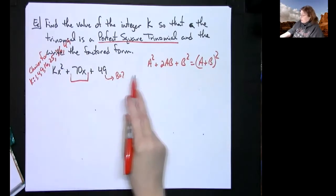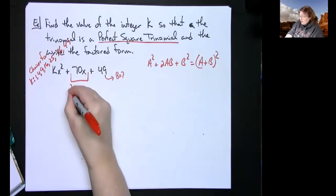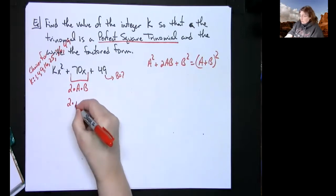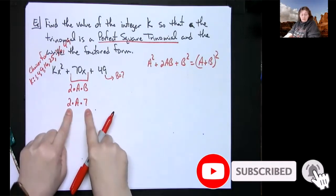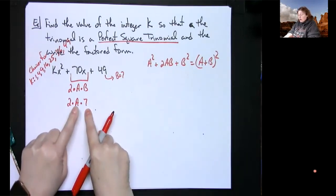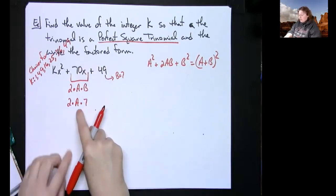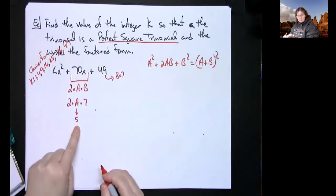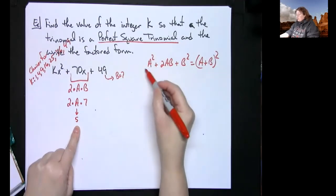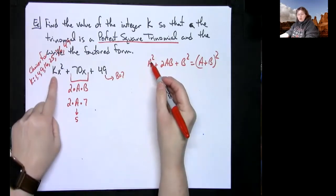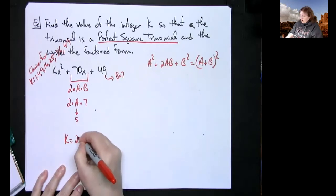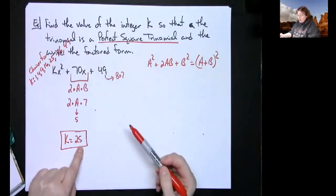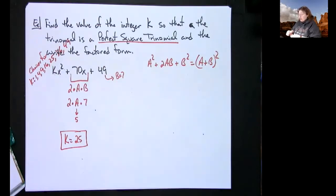I'm going to focus on the middle term. That middle term is 2 times a times b. I know b is 7, so it's 2 times a times 7, which is 14 times a. To get to 70, I divide 70 by 14, giving a equals 5. Two times 5 times 7 is 70 — that checks out. So if a is 5, then the coefficient k is a squared, which is 25. And 25 is indeed a perfect square number.